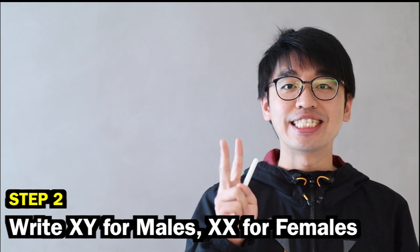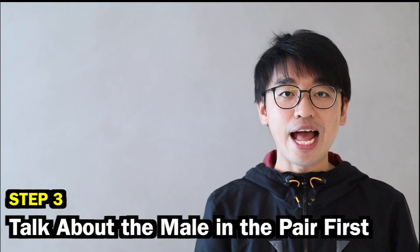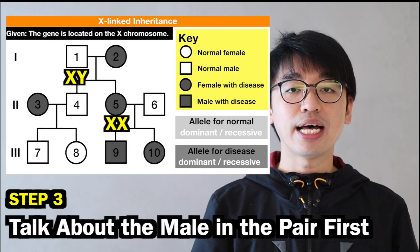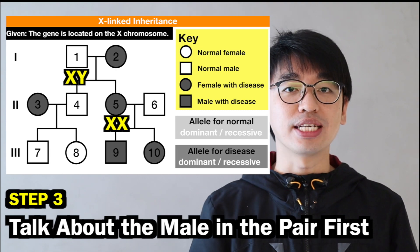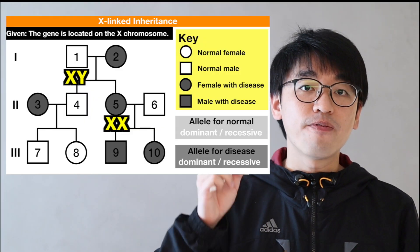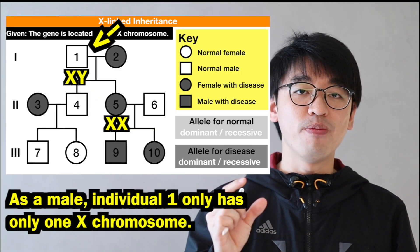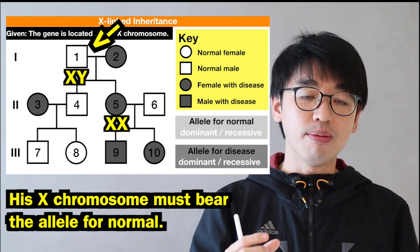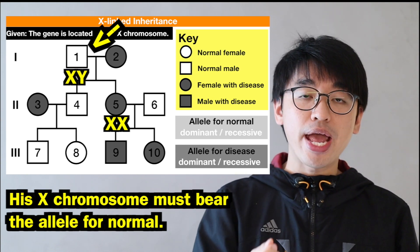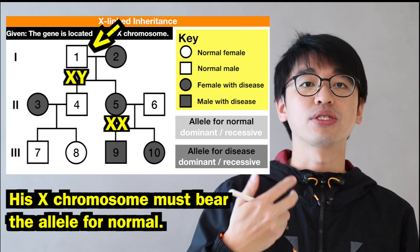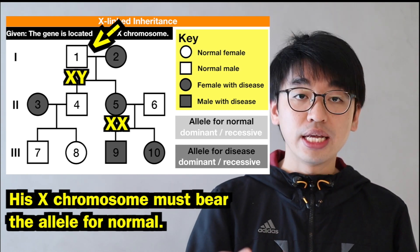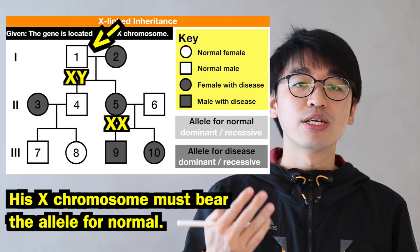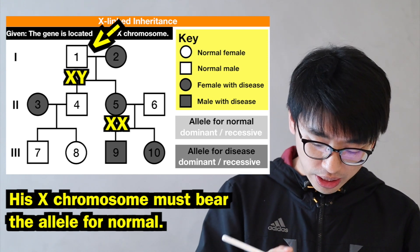Step three is to always talk about the male first, whether it's the father or the son. Since the male has only one X chromosome, that X chromosome must bear the allele which is expressed. Individual 1 expresses the normal phenotype, so his X chromosome must bear the allele for normal.